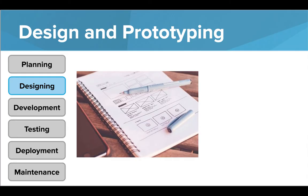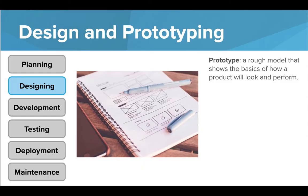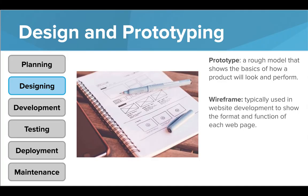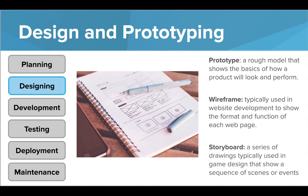The next stage is the designing stage. This is when a prototype, a wireframe, or a storyboard might be used to give an idea of how the product will look and perform once completed. A prototype is a model that performs the basics of what the final product might do. The design doesn't have to be 100% perfect, but it should give the stakeholders a feel of what they can expect once the product is completed. A wireframe is typically used in web development, and a storyboard can be used in video game creation. All of these designs include drawings and graphics that will demonstrate what the final product will look like.